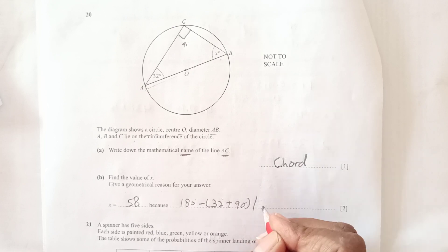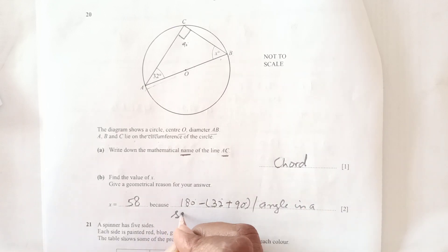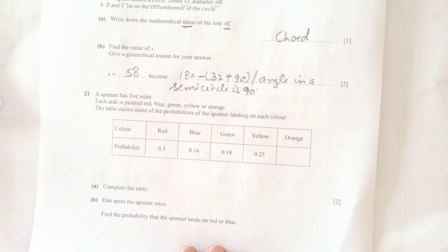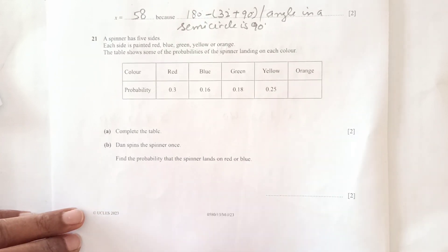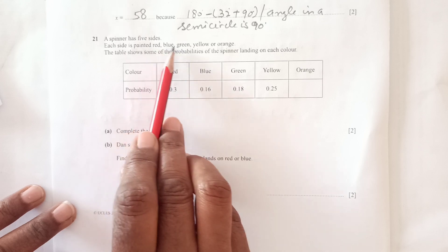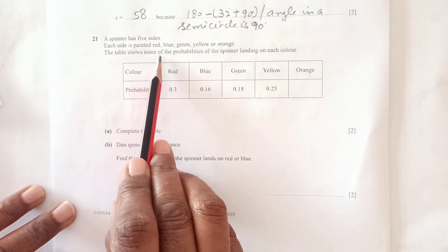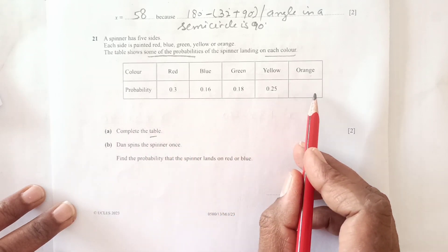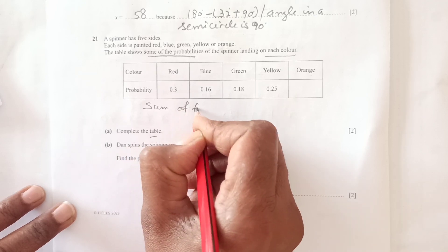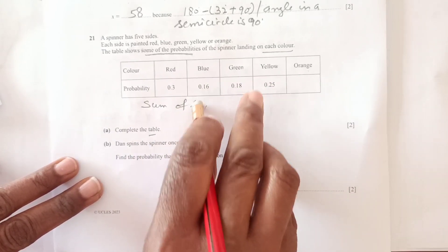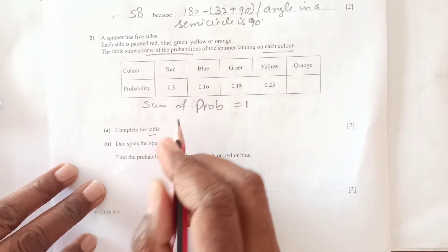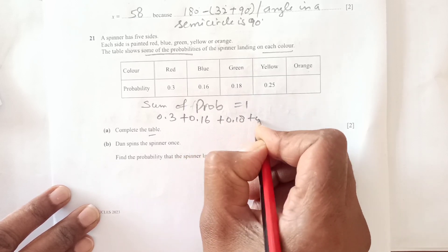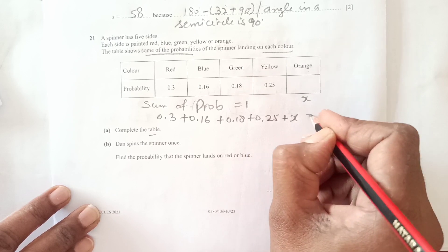Number 21: A spinner has five sides painted red, blue, green, yellow, and orange. The table shows some probabilities of the spinner landing on each color. One is missing. Complete the table. Since the sum of probabilities is one, we have 0.3 plus 0.16 plus 0.18 plus 0.25 plus x equals 1.